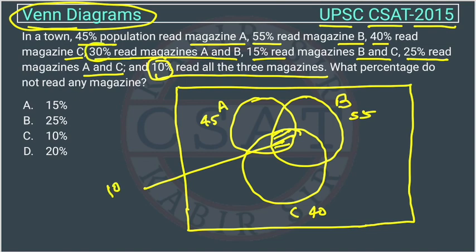30% read magazine A and B, and since the center is 10%, the remaining A∩B only region is 20. Similarly, B and C is given as 15, minus 10 gives 5 for that region. A and C is given as 25, minus 10 gives 15 for that region.